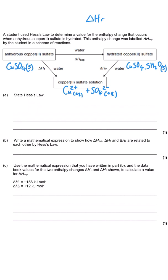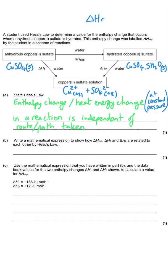The first question asks us to state Hesse's law. Quite simply, Hesse's law is that the enthalpy change or heat energy change in a particular reaction is independent of the route or path taken. We know that it only depends on where we start, which is going to be here, and where we finish, which is going to be here.